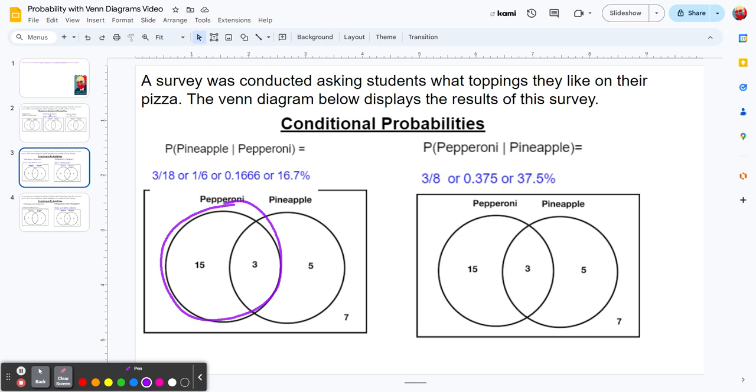Out of those 18 that like pepperoni, how many also like pineapple? That's the 3. So we get 3 out of 18, which reduces to 1 out of 6. 3 divided by 18 is 0.16666. Convert that to a percentage by multiplying by 100, you get 16.7%.